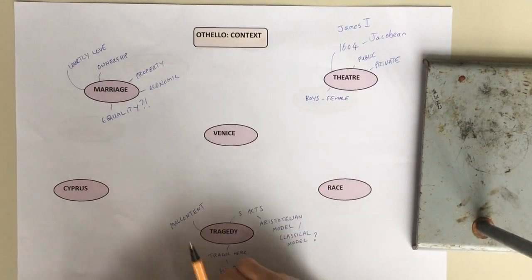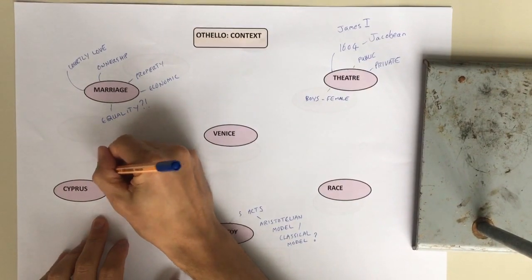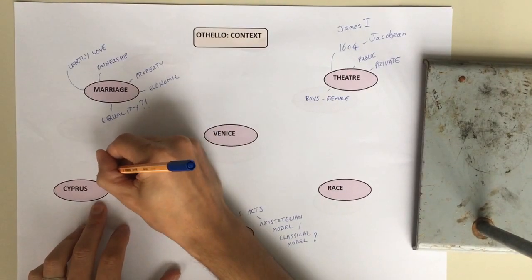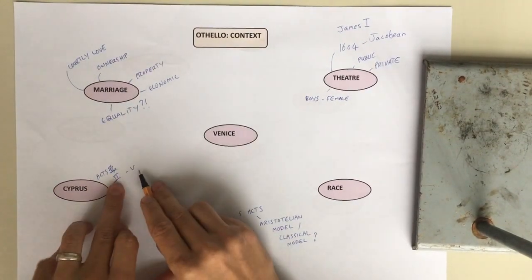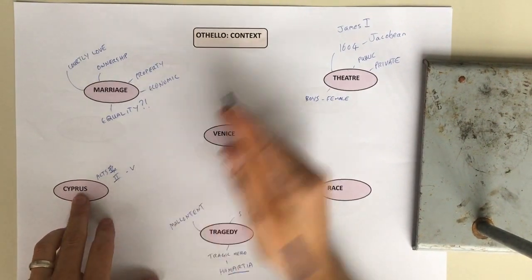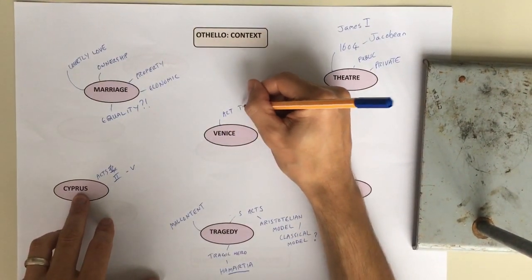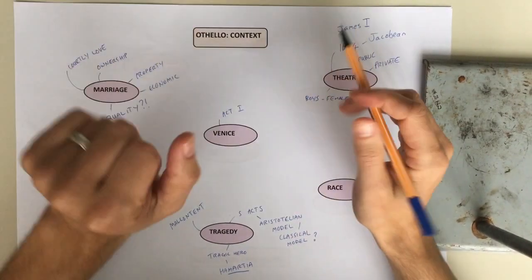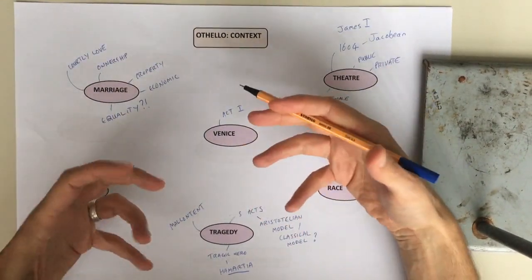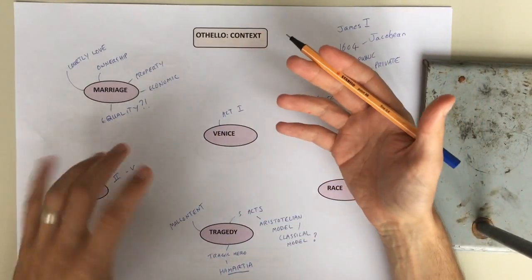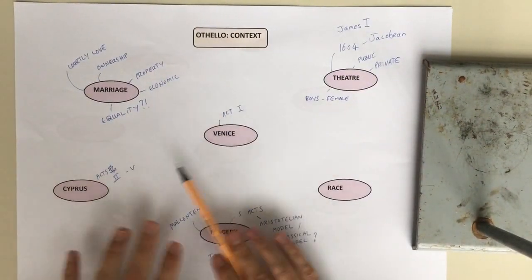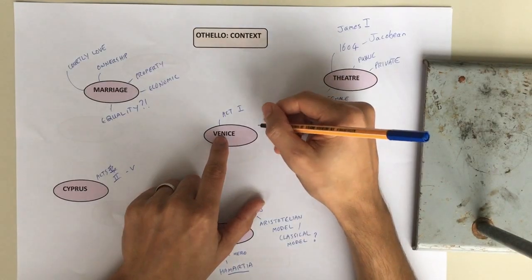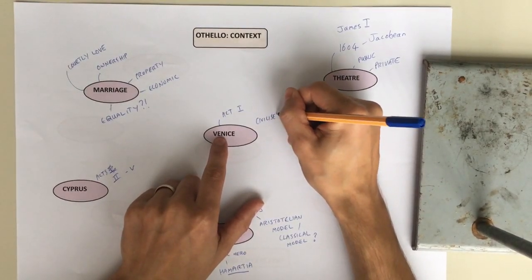The play is set in two different places. Acts 2 to 5 is set in Cyprus and Act 1 is set in Venice. In understanding what that means to people in London at that time, in exactly the same way we've got different attitudes towards, say, Italy and Spain and different stereotypes today, at the time you had stereotypes about these different places where the play is set. So Venice would be seen as quite a civilised place, even though it's a Catholic country. And of course, there's some religious tension at the time which we might get into.